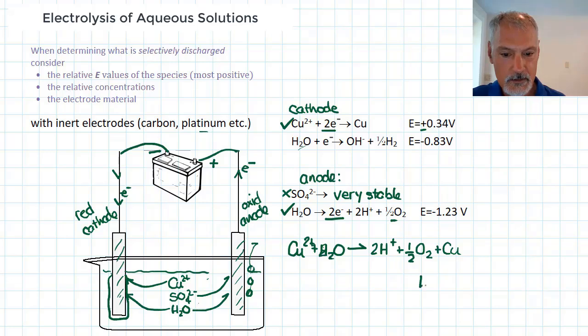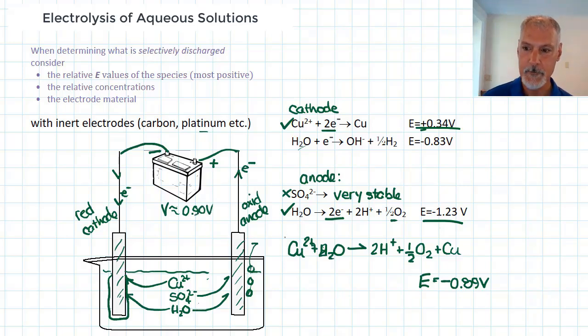And the minimum energy requirement for this reaction, taking these two values into account, negative 0.89 volts. So our battery needs to supply a voltage that will exceed that, so perhaps somewhere around 0.9 volts if not higher to encourage this reaction along. So we can see here with inert electrodes, we get the production of solid copper at one electrode and oxygen gas at the other.